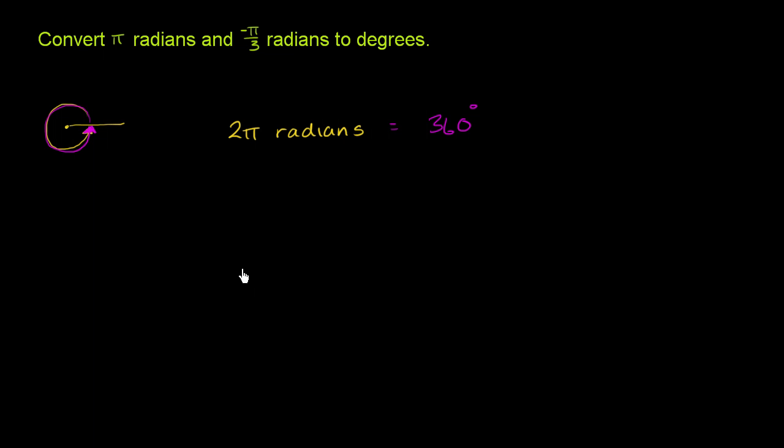Now, can we simplify this a little bit? Well, sure. Both 2π and 360 are divisible by 2. So let's divide things by 2. And if we do that, what do we get for what π radians are equal to?